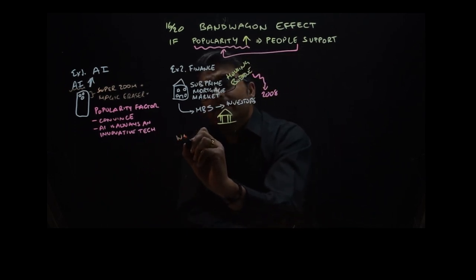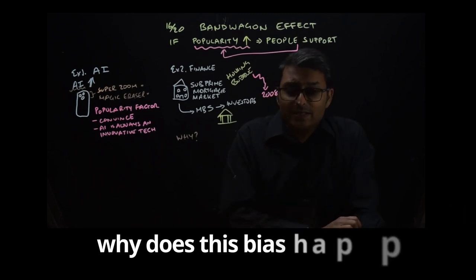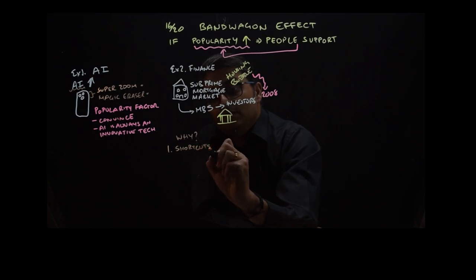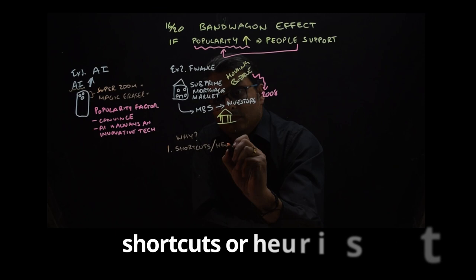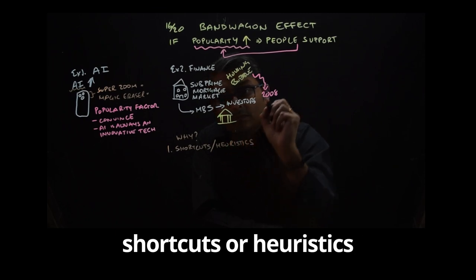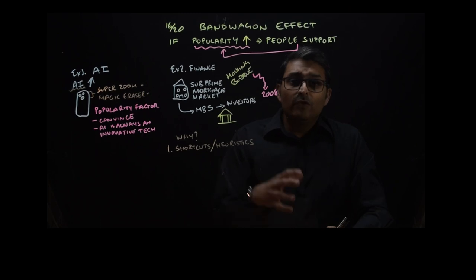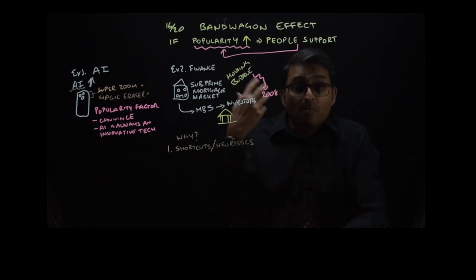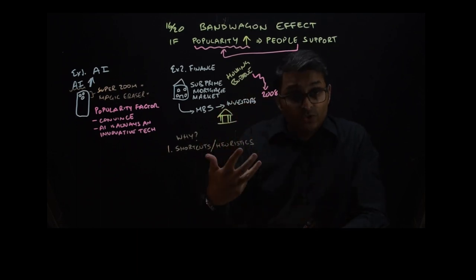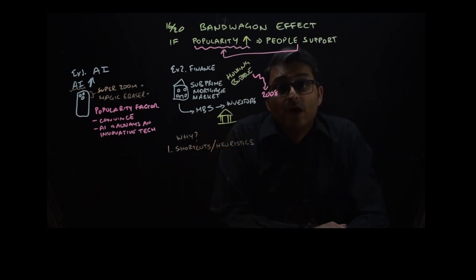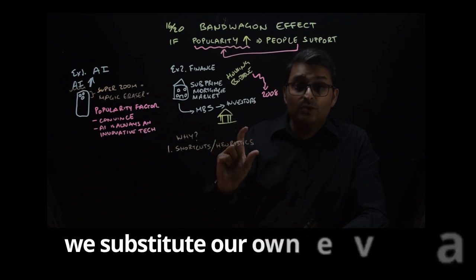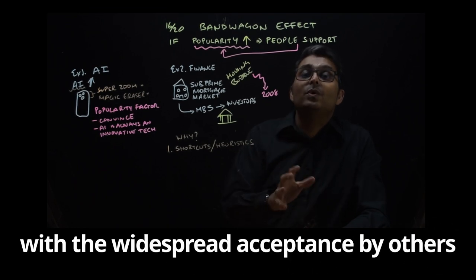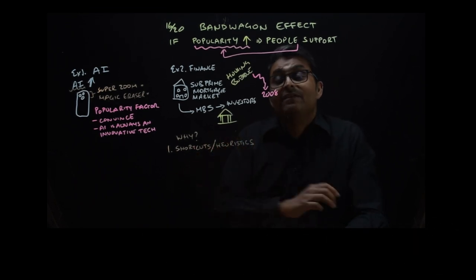So why does this bias happen? Well, there are four things. The first one is shortcuts or heuristics. Fully thinking through an idea takes time and mental effort, so our minds start to think about taking a shortcut. We skip this long process and rely on others. We substitute our own evaluation with the widespread acceptance as a cue that whatever that thing is, is safe to adopt.